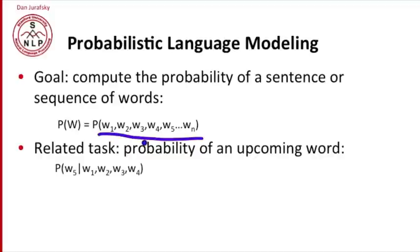Now this is related to the task of computing the probability of an upcoming word. So P(w5) given w1 through w4, is very related to the task of computing P(w1, w2, w3, w4, w5).